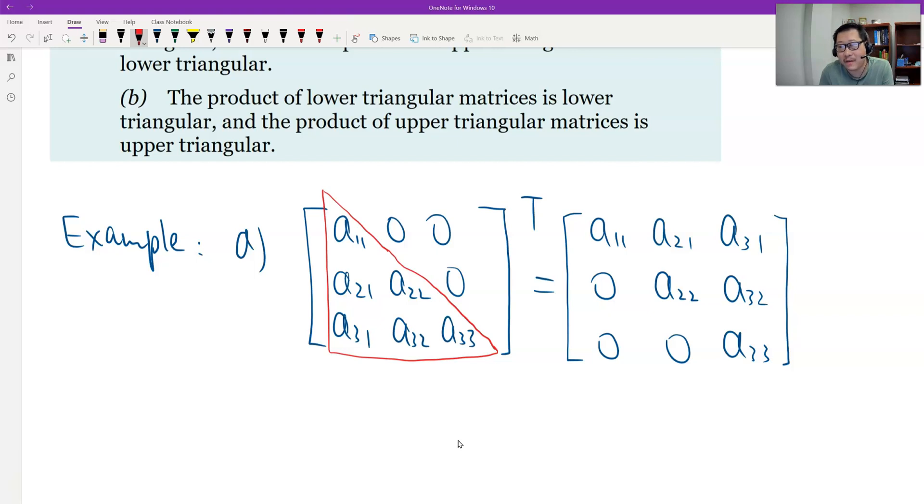What do we get? We definitely have an upper triangular, right? And this is a three by three, so you can extend it to general n by n. And in the same way, if you transpose an upper, you should get a lower.